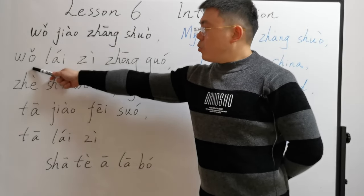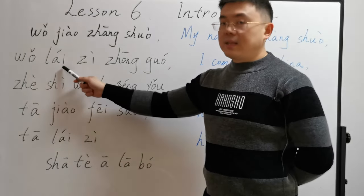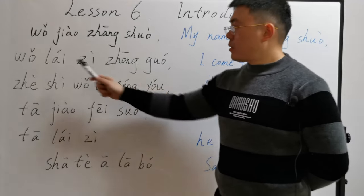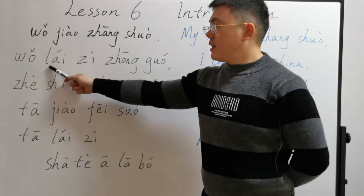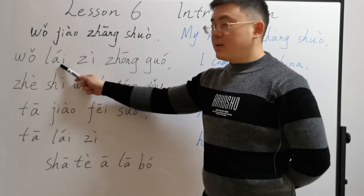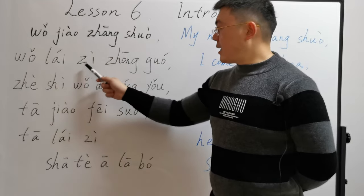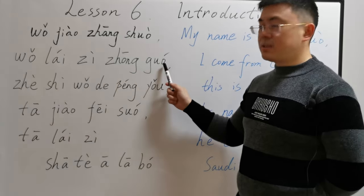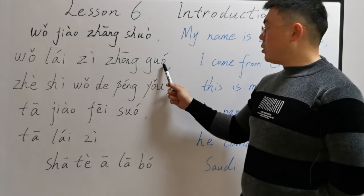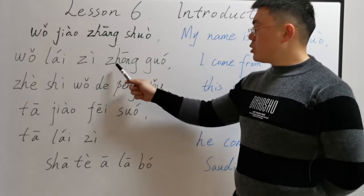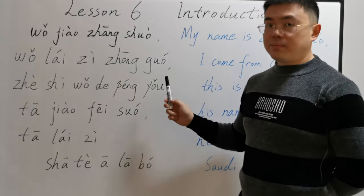Second one: 我来自中国. 我 means I, 来自 means come from. 来 is the second tone, 自 is the fourth tone. 中国 means China — 中 with 国, 国 is the second tone. 我来自中国.